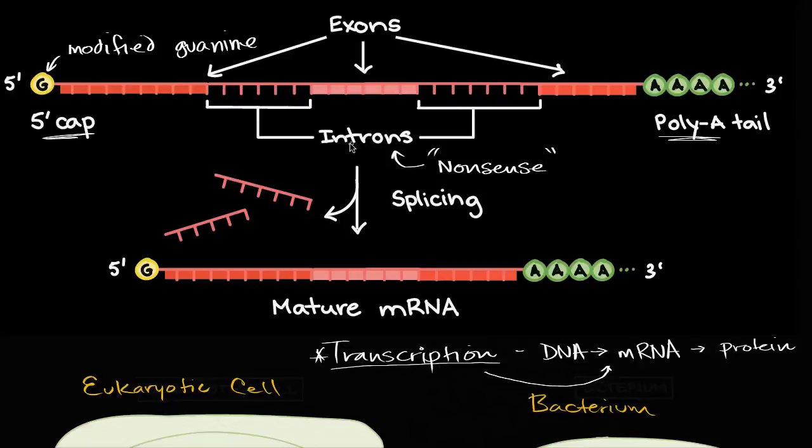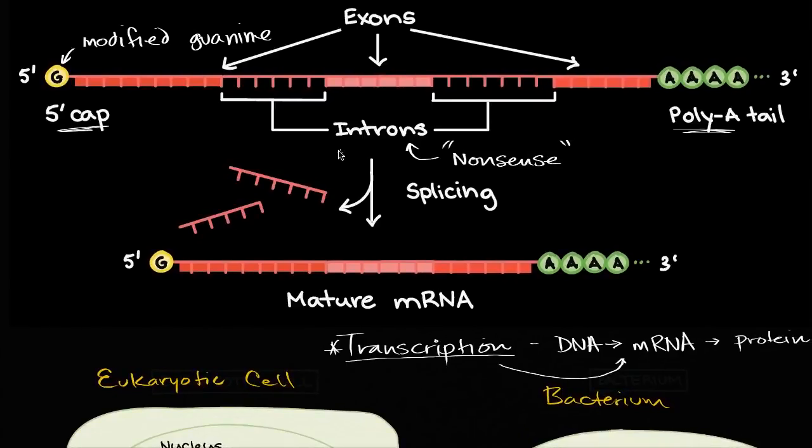And so these are actually processed out, they are spliced out, and I'm not going to go into all the details of the actors that cause the splicing, but as part of this eukaryotic processing, you add the cap, you add the tail, and then you splice out the introns, and then once you've spliced out the introns, all you have left are the exons.